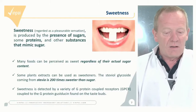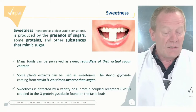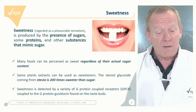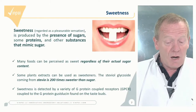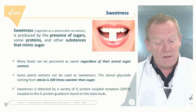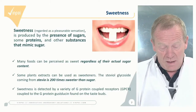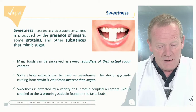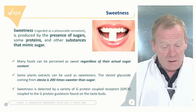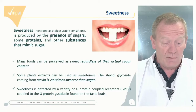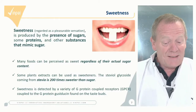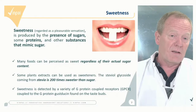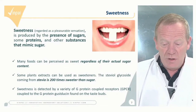Sweetness is regarded as a pleasurable sensation and is produced mainly by the presence of sugars, but also some proteins and other substances that mimic sugar. That is why many foods can be perceived as sweet regardless of their actual sugar content. Some substances used as sweeteners, like steviol glycoside from a plant, are 200 times sweeter than sugar. Sweetness is detected by contact of sweet substances with cell receptors called GPCR.